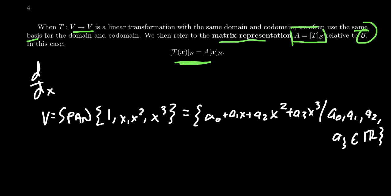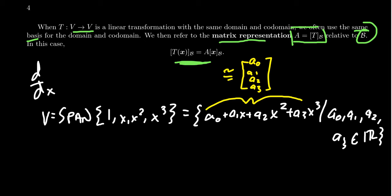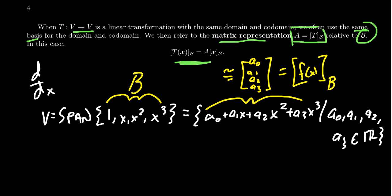We can think of this polynomial space as a vector space and represent vectors. If we take this generic cubic polynomial, we can identify it with the column vector (A0, A1, A2, A3). This is a way of putting the vector into B coordinates, where B is this spanning set — this basis.